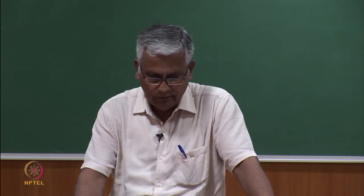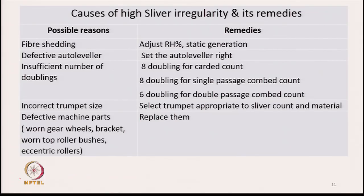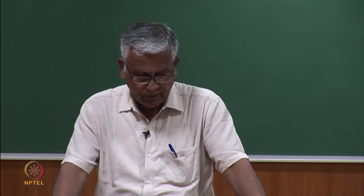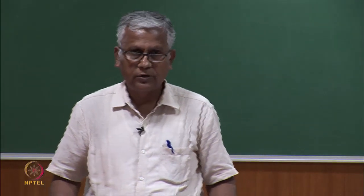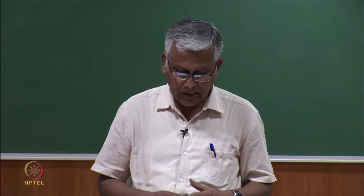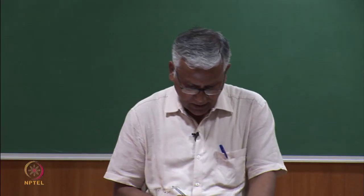Other sources of irregularity include defective machine parts such as worn gear wheels and brackets, worn top roller bushes, and eccentric rollers. These need to be checked periodically during maintenance and replaced when worn out, as they contribute to irregularity in the sliver. There is a contribution coming from machine parts, process parameters, and fiber parameters — all of them can have some influence on irregularity.